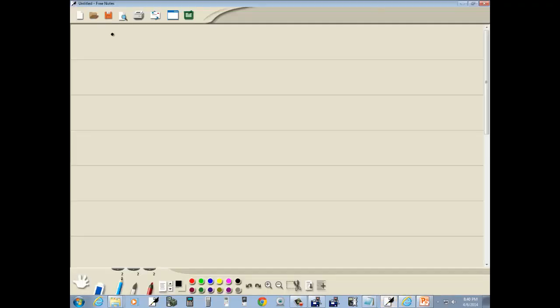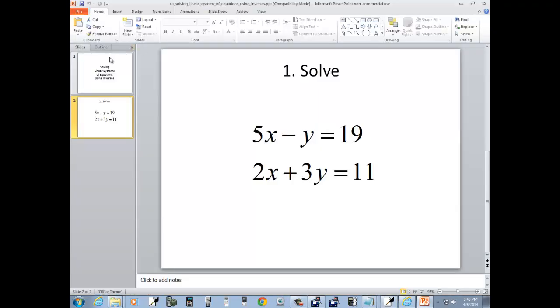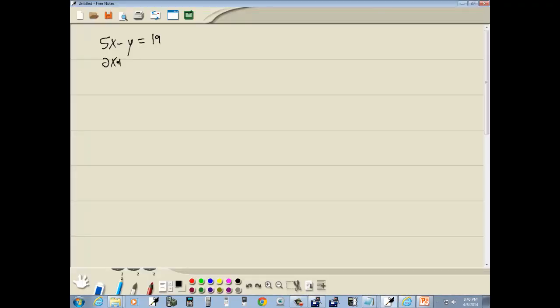Five x minus y equals nineteen, and two x plus three y is equal to eleven.